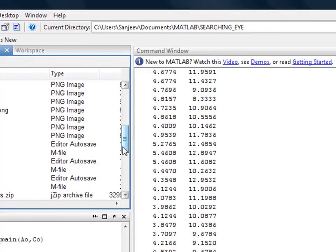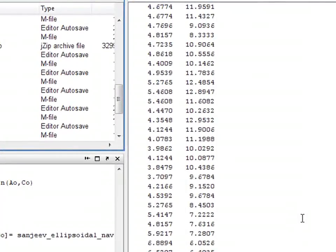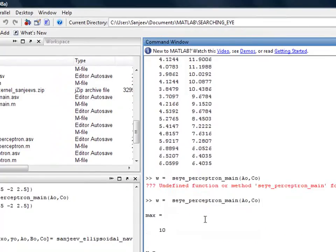The name of the main file is eye_perceptron_main. You can download it, it is in that package, the MATLAB package, and here is the result.